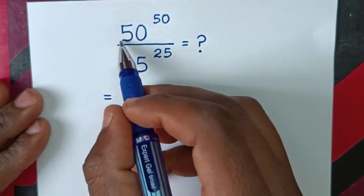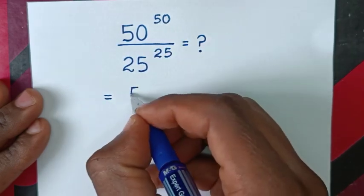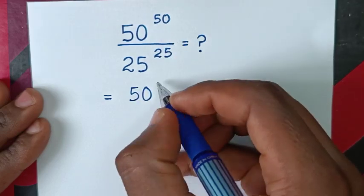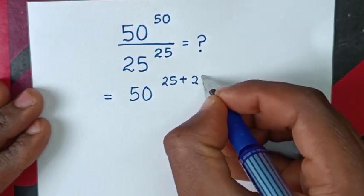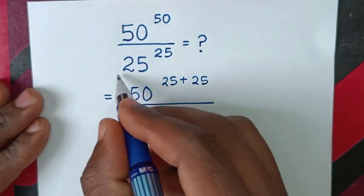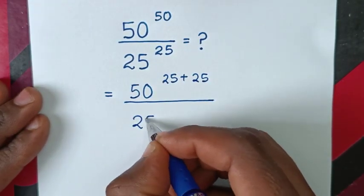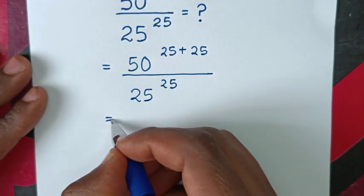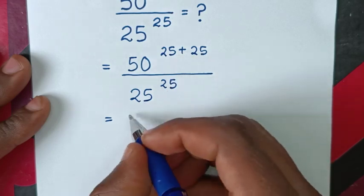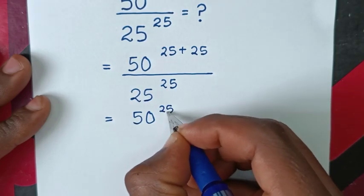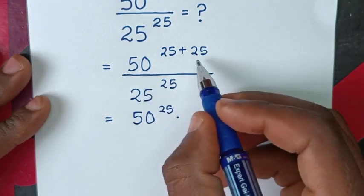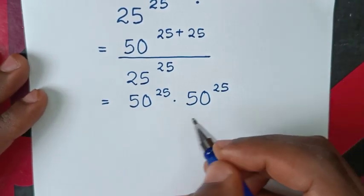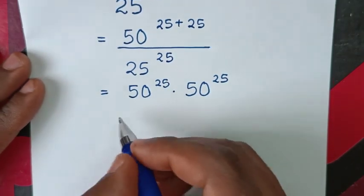In Method 1, 50 to the power of 50 can be written as 50 to the power of 25 plus 25, over 25 to the power of 25. This gives us 50^25 times 50^25 in the numerator, over 25^25.